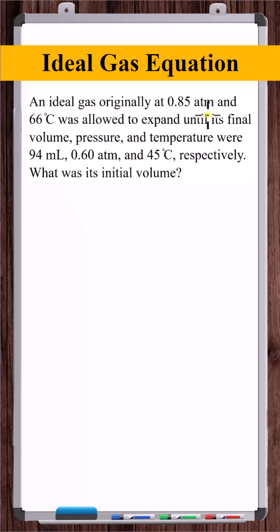An ideal gas, originally at 0.85 atmospheres and 66 degrees Celsius, was allowed to expand until its final volume, pressure, and temperature were 94 milliliters, 0.6 atmospheres, and 45 degrees Celsius, respectively. What was its initial volume?